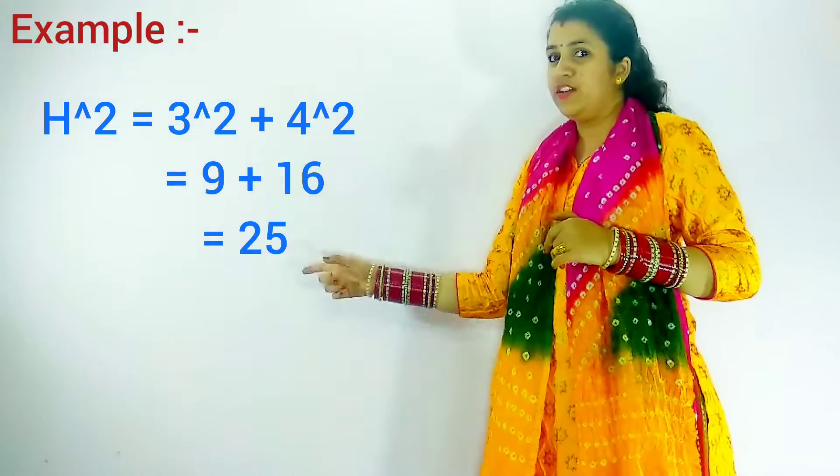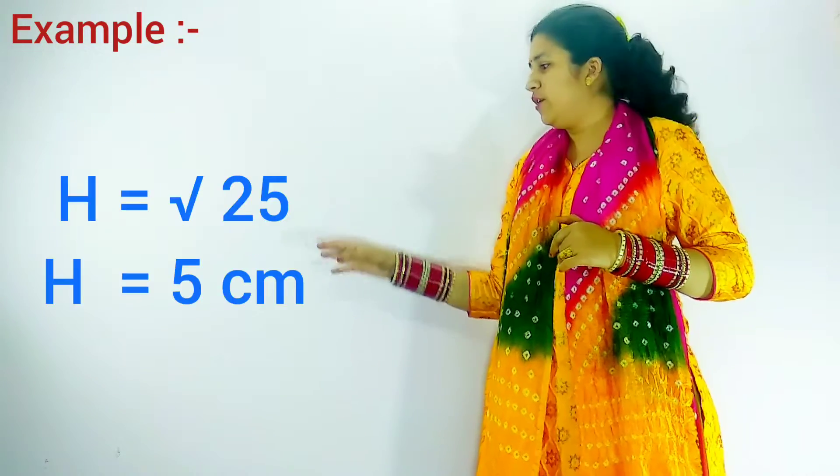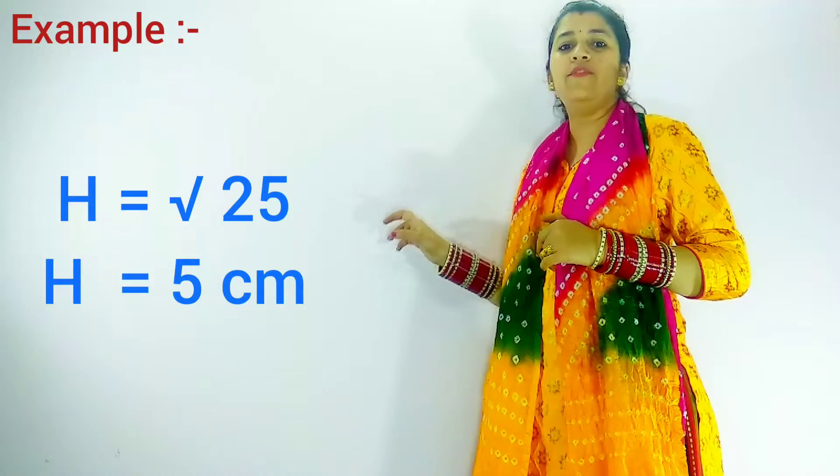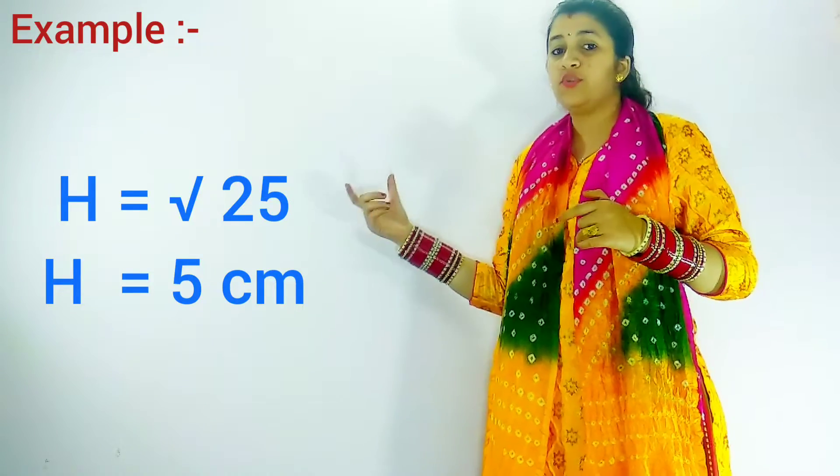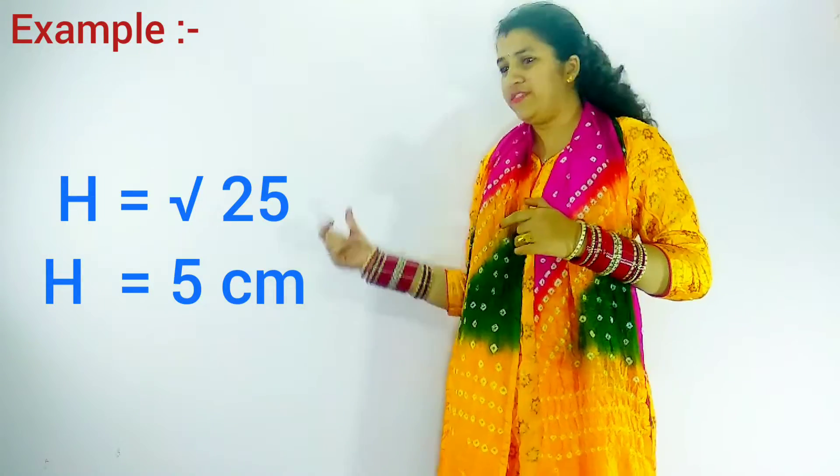Hypotenuse squared equals 25. How will we calculate the hypotenuse? We will take the square root of 25. The square root of 25 is 5, so hypotenuse equals 5 cm.